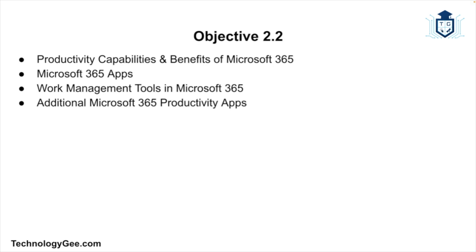Microsoft 365 isn't just a collection of tools — it's a comprehensive ecosystem designed to optimize workflows, enhance content creation, and facilitate real-time collaboration from virtually anywhere. Whether you're managing remote teams, organizing projects, or automating repetitive tasks, Microsoft 365 provides the technology to improve productivity while ensuring security and compliance. In this video, we're going to explore the key productivity solutions within Microsoft 365, including its capabilities, core applications, and additional tools.